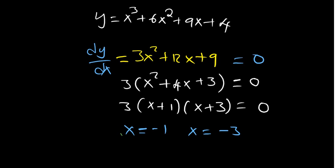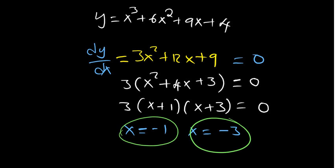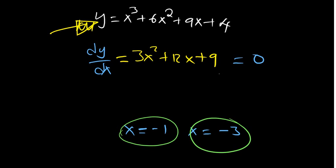These are the stationary points — the points where the derivative is equal to zero. You can find the y-coordinate by substituting back into the original function. Now we're interested in determining whether x = -1 and x = -3 are minima or maxima points, so we determine what we call the second derivative.